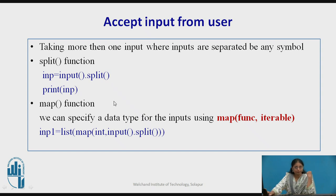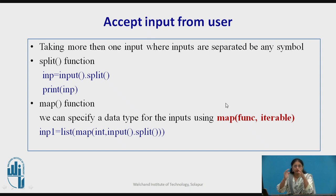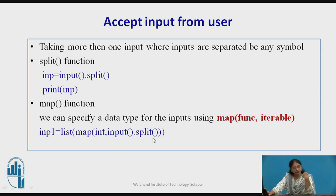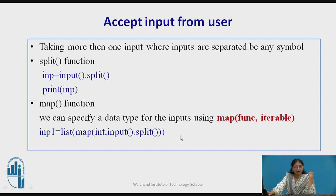The second function is map. Map is a function which takes two inputs: one is a function you want to apply, and the second is an iterable. For example, after splitting by spaces, it creates many chunks. To convert those into a list or iterable, we use the map function. Here the function used is `int`, meaning whatever string is read will be converted into integer, and then a list will be created from this input. This is how split and map work together.